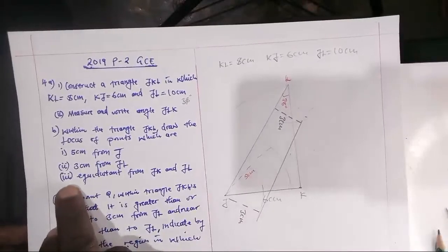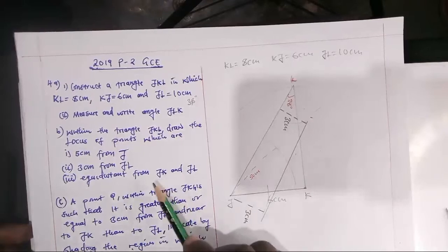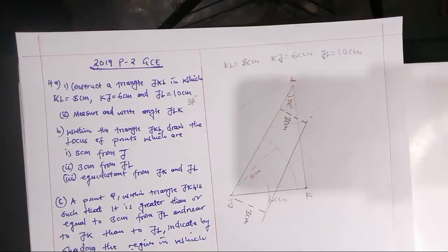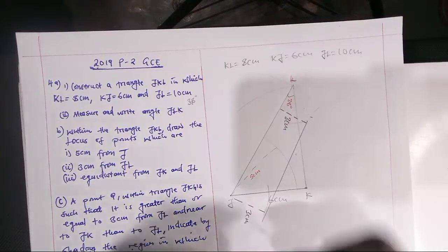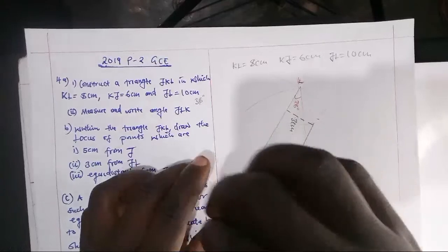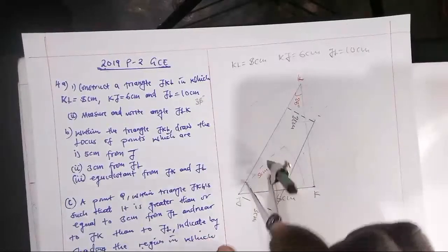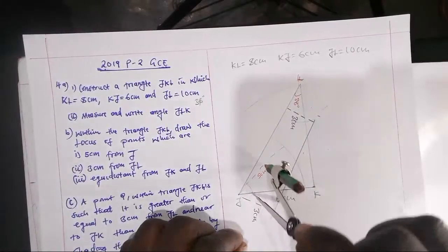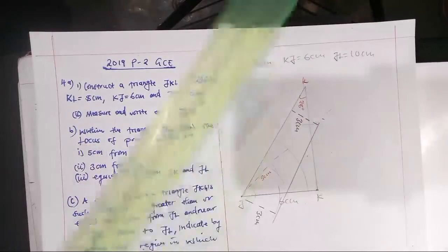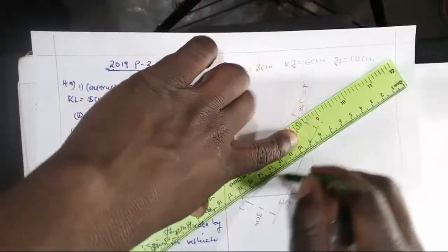For roman numeral three: equidistant from JK and JL. The letter that appears most is J, so we stand at J. We open the compass a small amount, strike an arc on JK, then open it a little more and strike arcs from both ends. Where they meet, we draw a line from J through that point — this is the angle bisector of angle J.